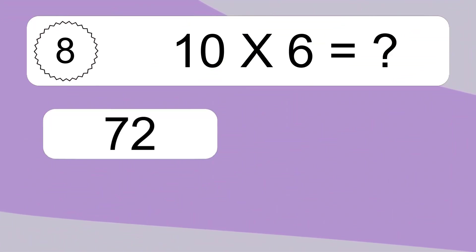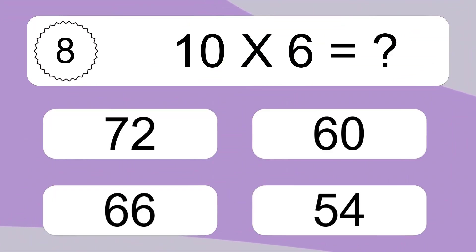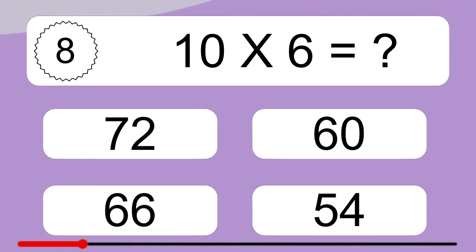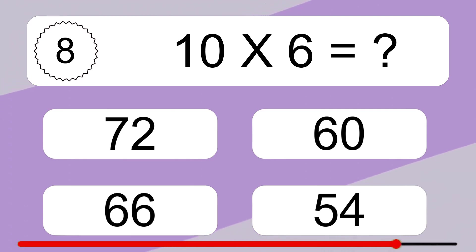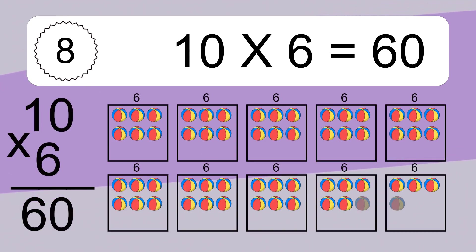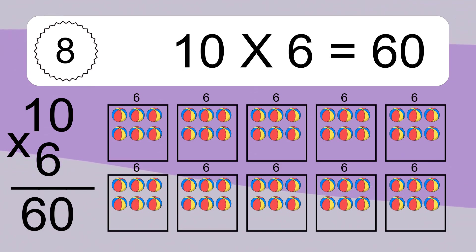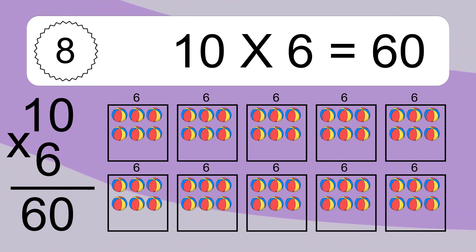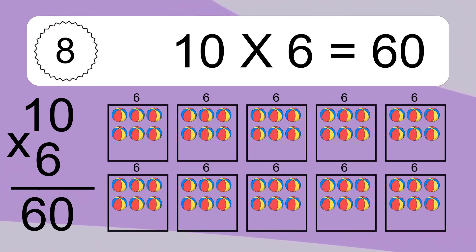10 times 6 equals what? 10 times 6 equals 60. We have 10 boxes, and each box has 6 colorful balls inside. If you count all the balls in all the boxes together, you will have 10 times 6 balls. This equals 60 balls.